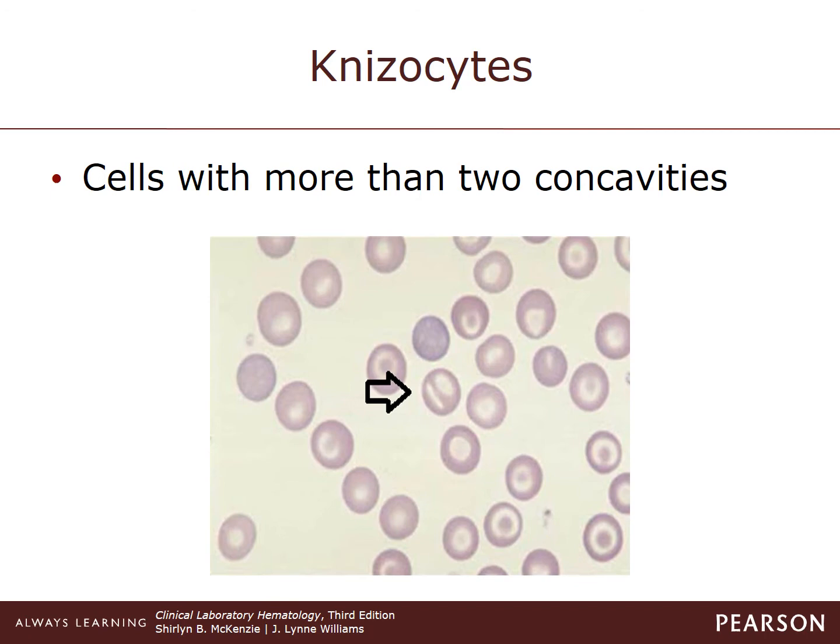Stomatocytes are rare cells with two concavities. The cell's appearance on the stained smear can vary depending on how the cell comes to rest on the surface. However, they usually have a dark-staining band across the center with a pale area on either side, surrounded by a rim of pink-staining hemoglobin.